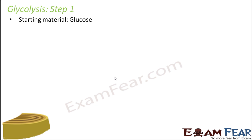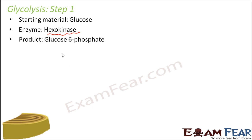Now let us look at the 10-step glycolysis process. Since it is a 10-step process, many intermediate products will be formed. A lot of enzymes play crucial roles at each step. For each step, we will discuss the starting material, the product, and the enzyme involved. In step one, the starting material is glucose, the enzyme is hexokinase, and the product is glucose-6-phosphate.